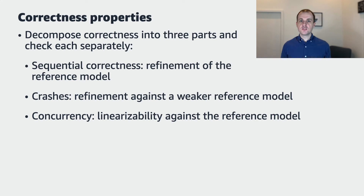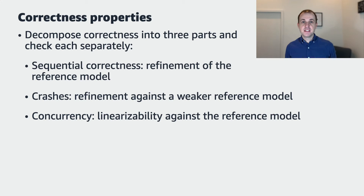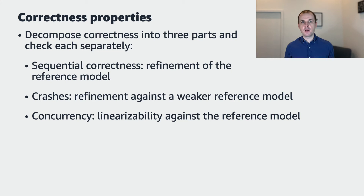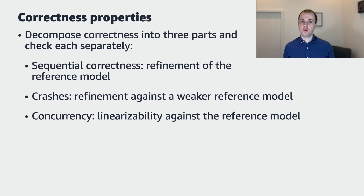But this requirement is too strong in the face of two forms of non-determinism that real storage systems face. First, crashes can cause data loss that the strong reference model specification doesn't account for. Second, concurrency allows operations to overlap, making it difficult to check conformance while concurrent operations are in flight. We found it useful to decompose our desired correctness property into three parts and reason about each part separately. For sequential, crash-free executions, we check refinement directly. For sequential, crashing executions, we extend the reference models to define which data can be lost after a crash, and then check a weaker refinement property. And finally, for concurrent executions, we check linearizability against a sequential reference model. This decomposition also lets us check each of these properties with a different automated approach, helping us with our goal of being lightweight, while still achieving good coverage of potential bugs.